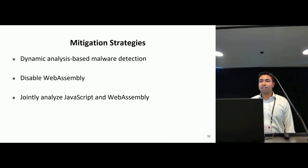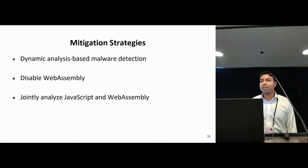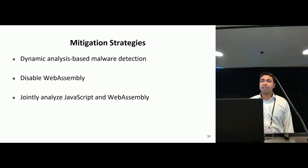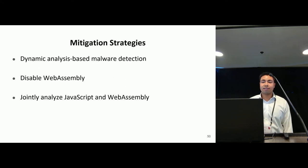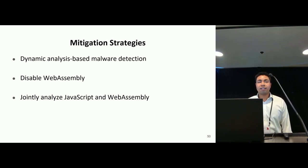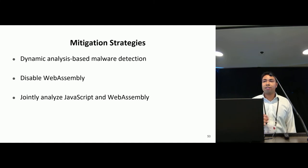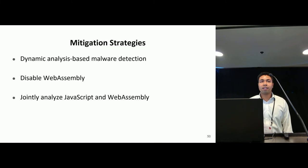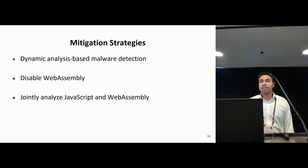We'll now discuss a few mitigation strategies that can counter WafiSkater. The first is to use dynamic analysis-based malware detection, since WafiSkater doesn't impact the general runtime characteristics of the program — however, these detectors often impose non-negligible overhead that makes them unappealing as replacements for static detectors. The second is to disable WebAssembly entirely, but this seems extreme and infeasible as WebAssembly adoption grows. The third is to jointly analyze JavaScript and WebAssembly, reasoning about how data and control flow between the two languages. We're not aware of any detector that does this, but we hope our work raises awareness that such an analysis would be useful.